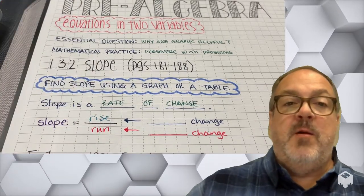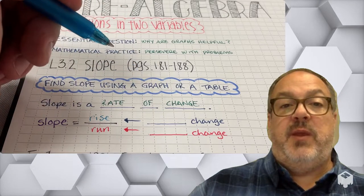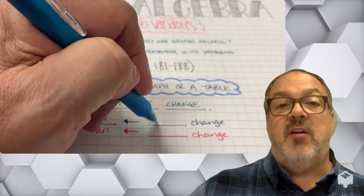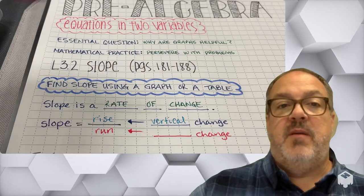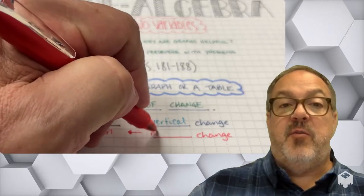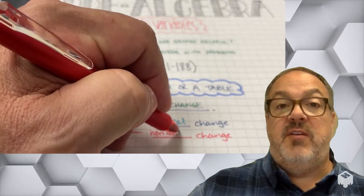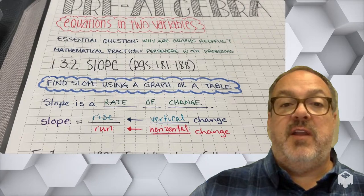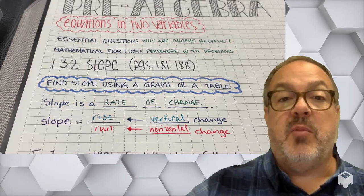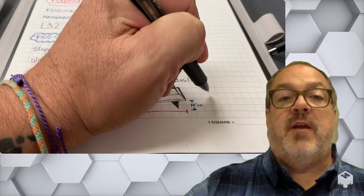And we can represent the slope as the rise over the run. Now, what does that mean? Well, rise is going to be the change in our vertical placement of points on a coordinate grid. And then the run is going to be the change in the horizontal placement of points on a coordinate grid.